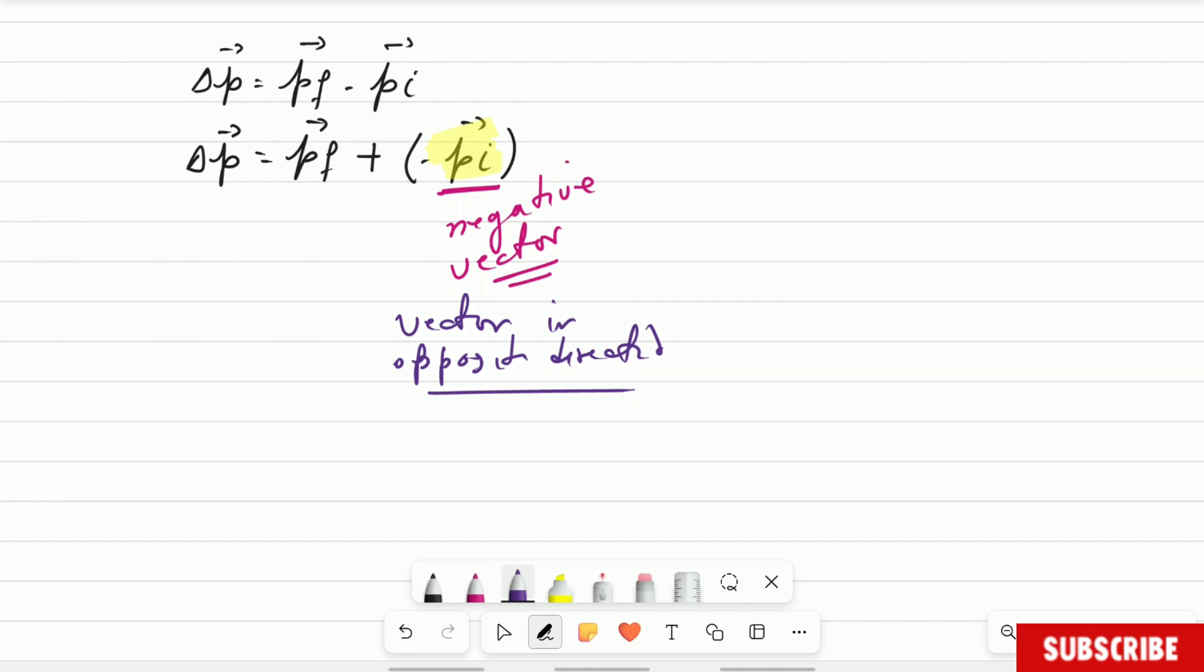Alright, so we are going to go back to the example now of the ball that we were talking before. Remember we did the question of a ball that was thrown to a wall. Now we are going to do the drawing, the vector diagram for that one. So what do we have?